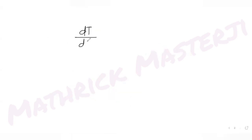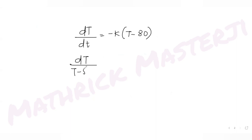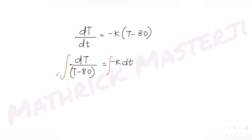So I have my differential equation: dT/dt equals minus k times (T minus 80). To solve this, I can take (T minus 80) in the denominator and move dt to the other side, separating the variables as we do in differential equations, and then taking integrals on both sides.